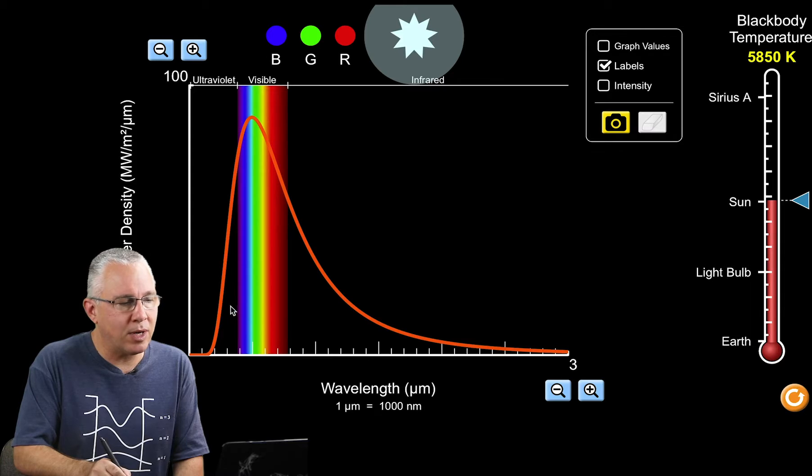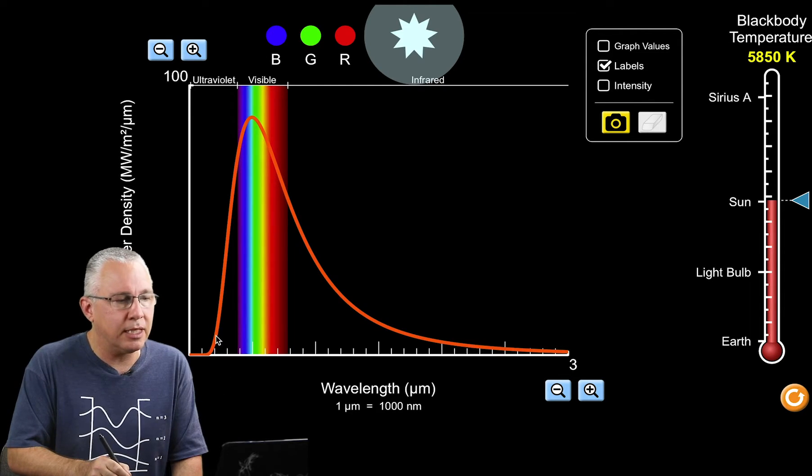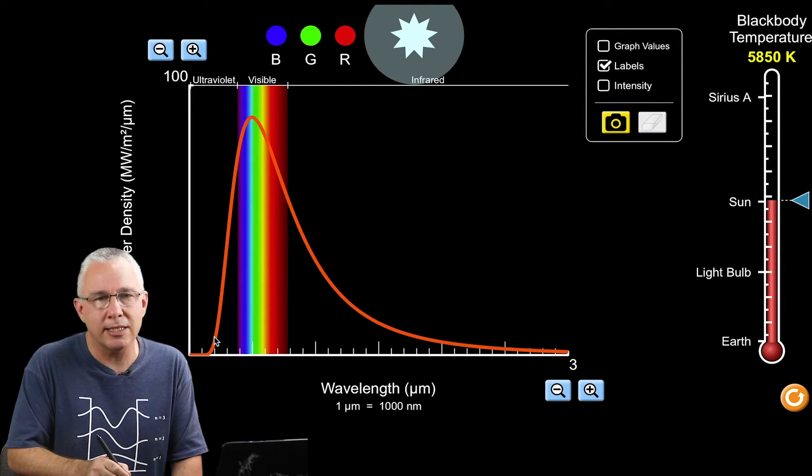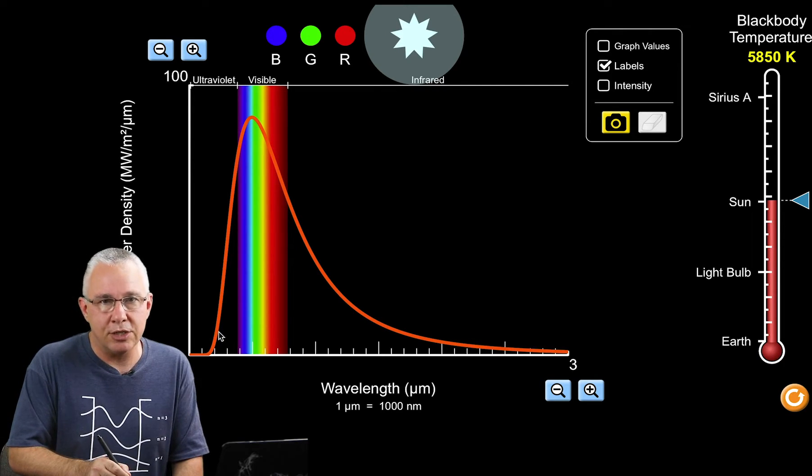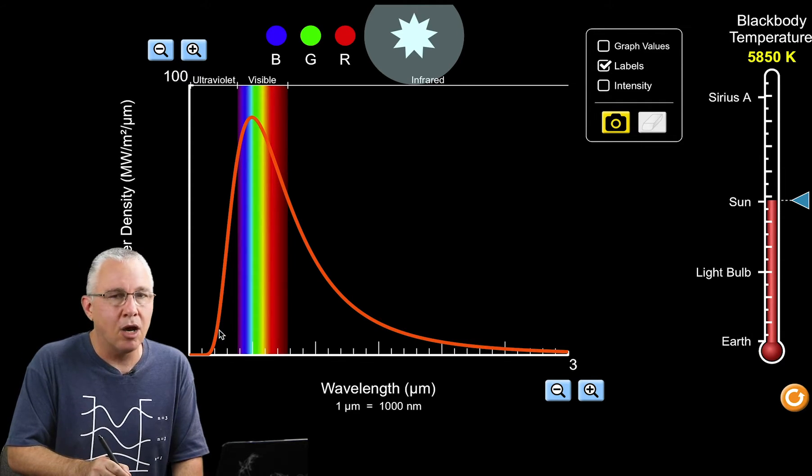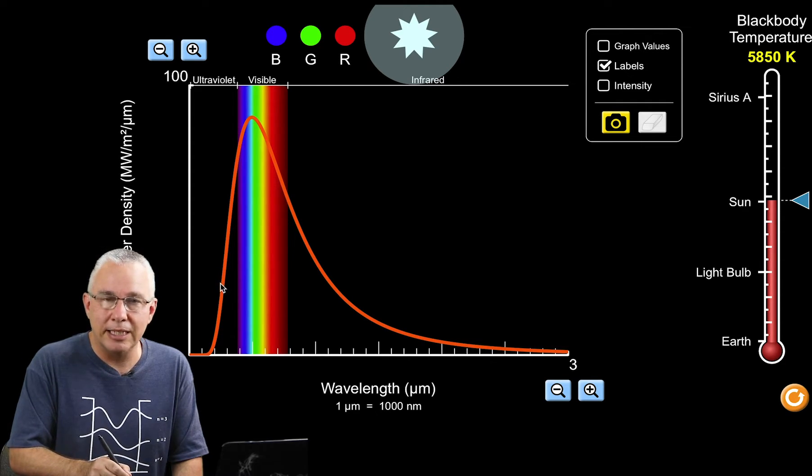You'll see there's quite a significant drop off in the ultraviolet section. The sun is giving off ultraviolet radiation, but in terms of higher frequencies the intensity of those ultraviolet wavelengths significantly drops off.